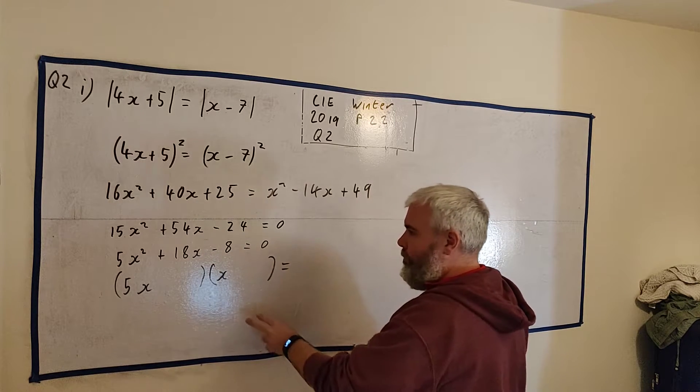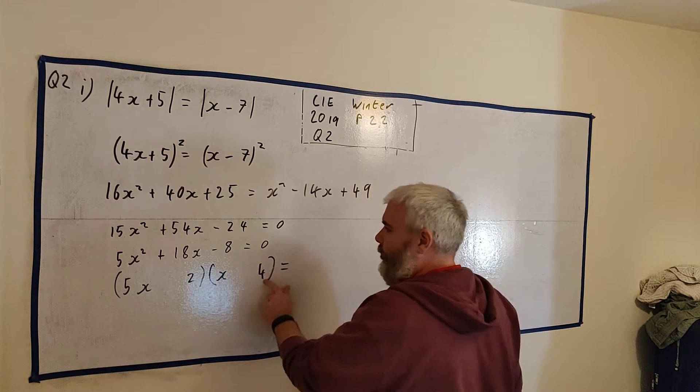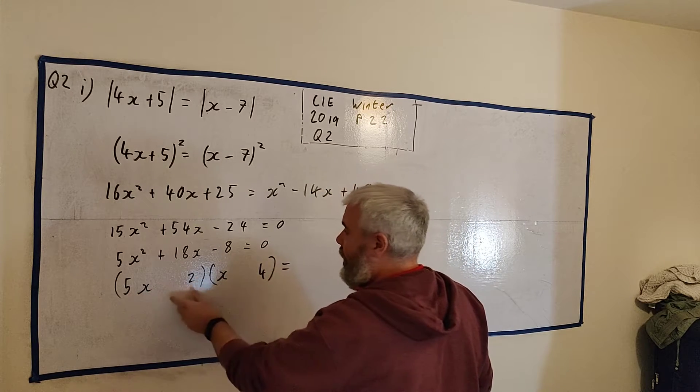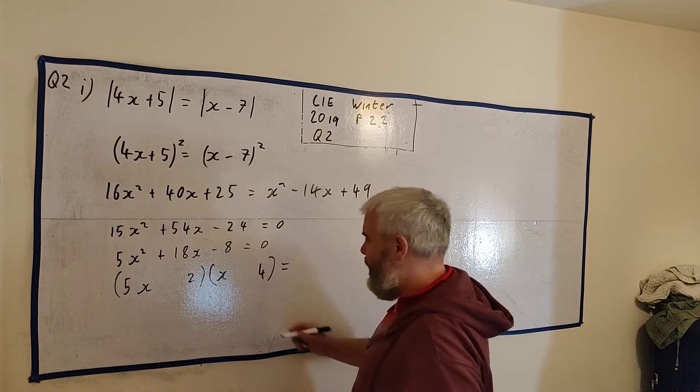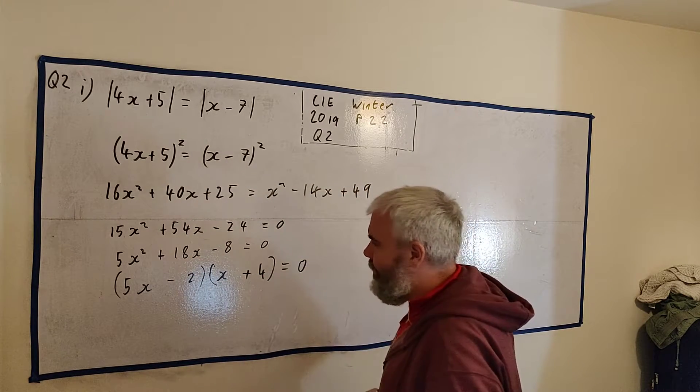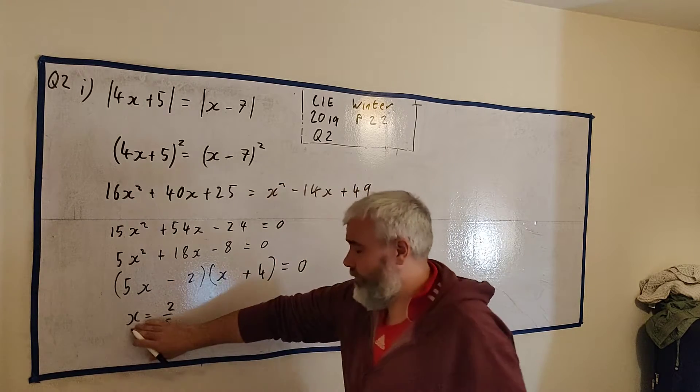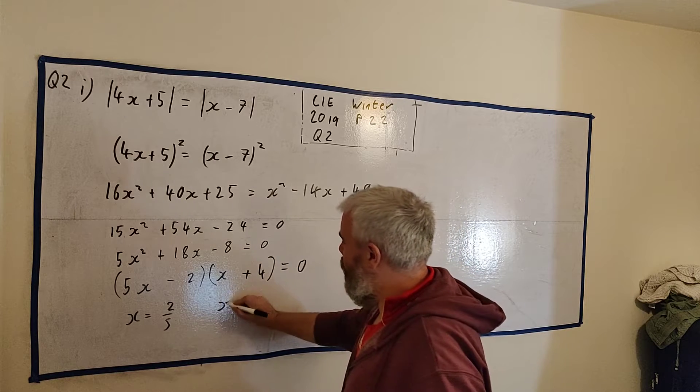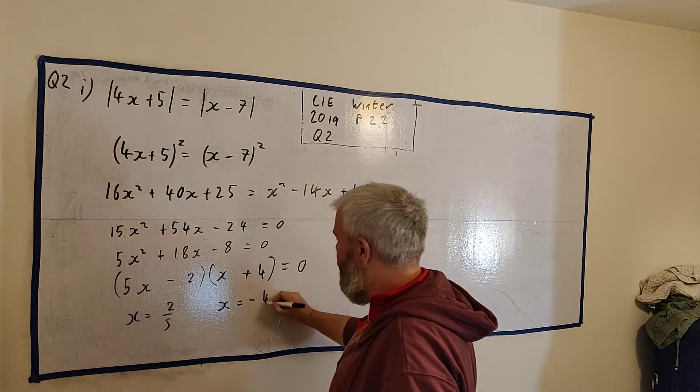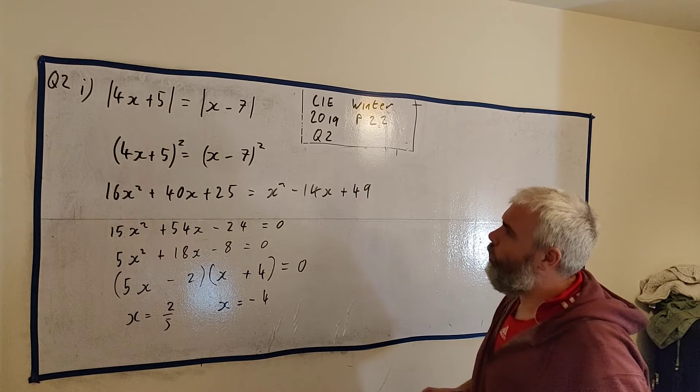So a 4 here and a 2 here will work, I think. 4 times 5 is 20. Minus 2 will get us to 18. So that's a minus and that's a plus. I think that works. This all equals 0. That implies that 5x minus 2 equals 0, so x equals 2 over 5. Or x plus 4 equals 0, so x is equal to minus 4. So that's the two solutions to part 1.